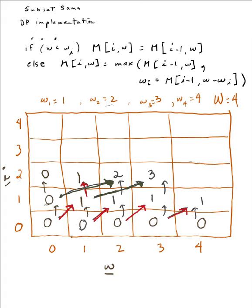For M[2][4]: I have items one and two to work with and I'm looking to find a maximum weight of four. We can eyeball that using both gives three. One possibility in the max is to not use item two — that gives M[1][4] equals one. The other possibility is to use item two, subtracting its weight of two, so I look at M[1][2] which is one, and add two to get three. The max chooses three, and this is the choice recorded here.